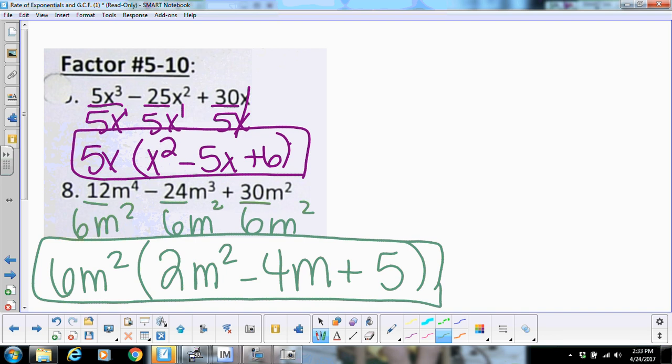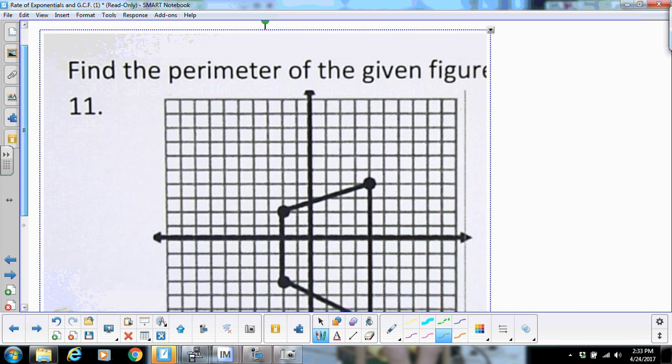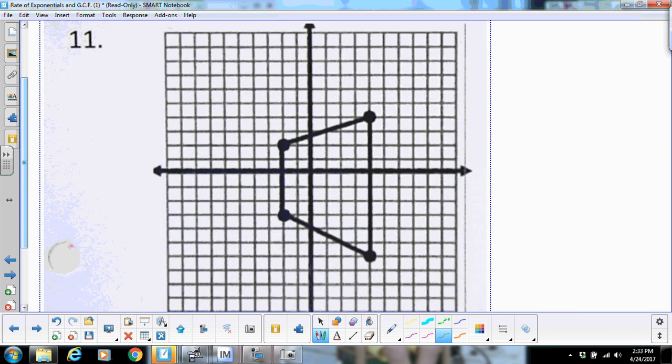And then the last two are your perimeter problems. We did one kind of in a hurry at the end of class today, so I want to make sure I did one of these today. Remember these two straight lines right here. You can count those. So it starts here. So it's going to be 1, 2, 3, 4, 5, 6, 7, 8, 9, 10 here. And then this one's going to be 1, 2, 3, 4, 5 here.